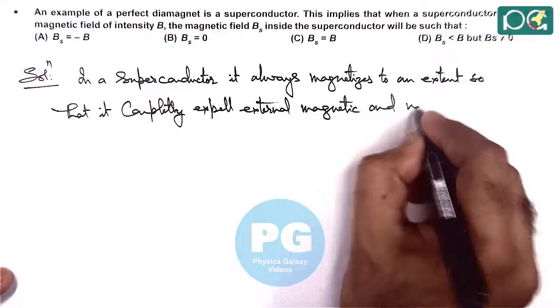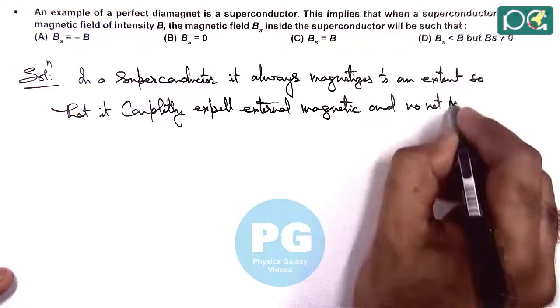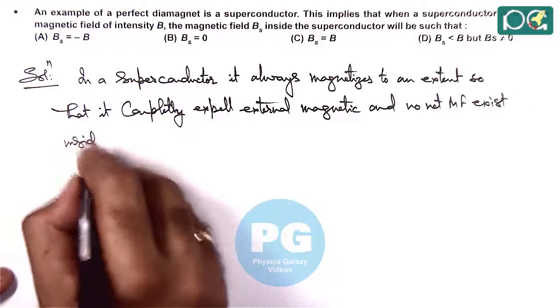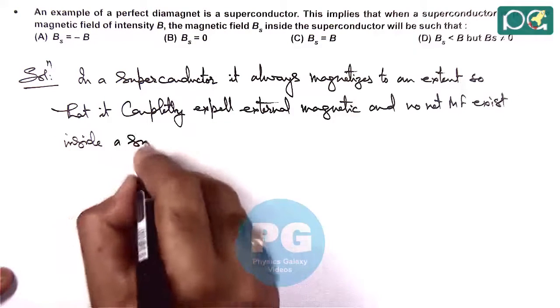so that it completely expels external magnetic field. And no net magnetic field exists inside a superconducting material.